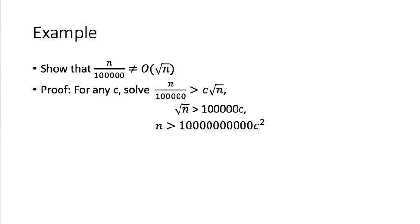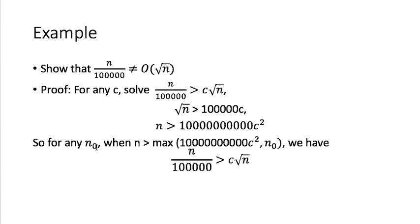Squaring both sides — since they are all positive — I get n greater than some large number times c². That means no matter what c you give me: once c is given, c² is a constant, and this large number times c² is still a constant. When n exceeds this constant, we always have n/100,000 greater than c times √n. So no matter what n₀ you give me, I can always find a sufficiently large n greater than n₀.